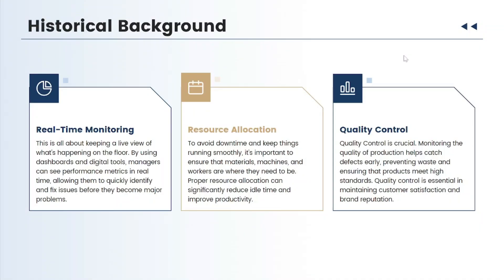The first element is real-time monitoring. This is all about keeping a live view of what's happening on the floor. By using dashboards and digital tools, managers can see performance metrics in real time, allowing them to quickly identify and fix issues before they become major problems. Next is resource allocation — to avoid downtime and keep things running smoothly, it's important to ensure that materials, machines, and workers are where they need to be.